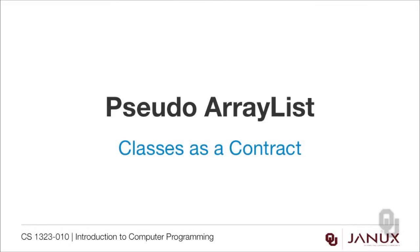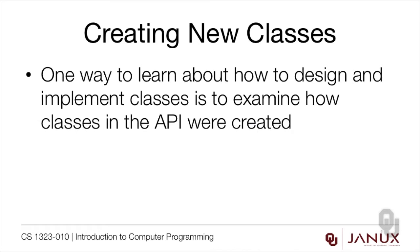Let's continue our study of classes as a contract by looking at a pseudo-ArrayList. One way to learn about how to design and implement classes is to examine how classes in the API were created. You could do this by reading the code in the API, available online at the Oracle website, but it's commercial code written in a much more sophisticated and complicated way than what we're accustomed to. So it's not as helpful as you might think. Instead, we're going to redesign and work through parts of this class to show you the process for creating good classes.